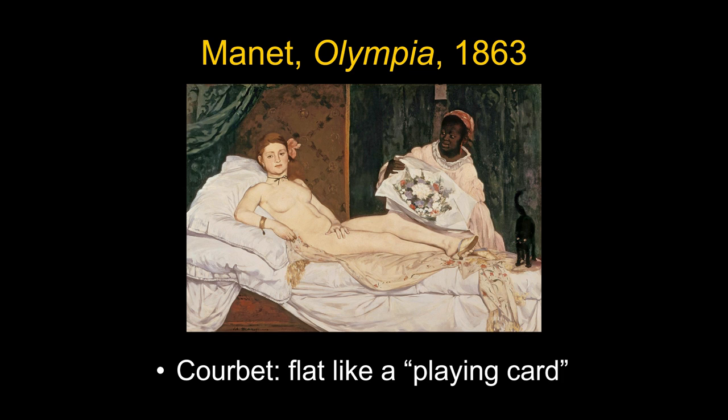One of the faults cited was from Courbet — even some realist painters didn't like this. Courbet said it's flat, it looks like a playing card. And when you look at it, there's not a lot of chiaroscuro, not much modeling to make her look solid and volumetric — just little bits of shadow. Once again, that idea that bright light can remove shadows within the figure.